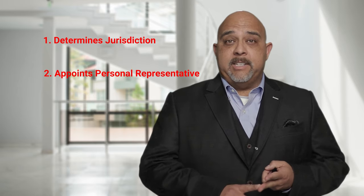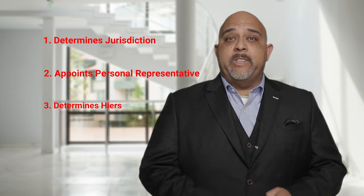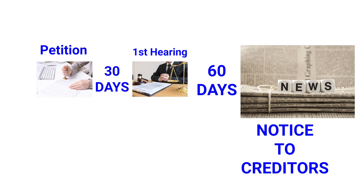Once the court has decided those three things — that it has jurisdiction, appointed somebody as the executor or personal representative, and determined who the heirs are — the next thing that usually happens is we file what's called notice to creditors. That means we're literally giving creditors notice that a probate has been filed and has actually started. Creditors, depending on the state, might have 30, 60, or 90 days to come forward and file a claim with the district court against the estate. This could be a doctor, an ambulance service, a credit card — really any creditor with a legitimate claim.